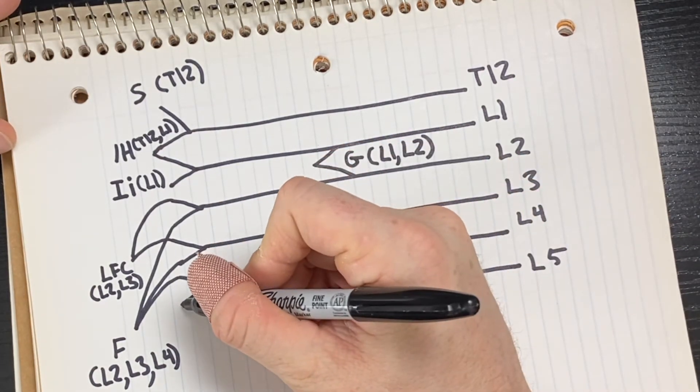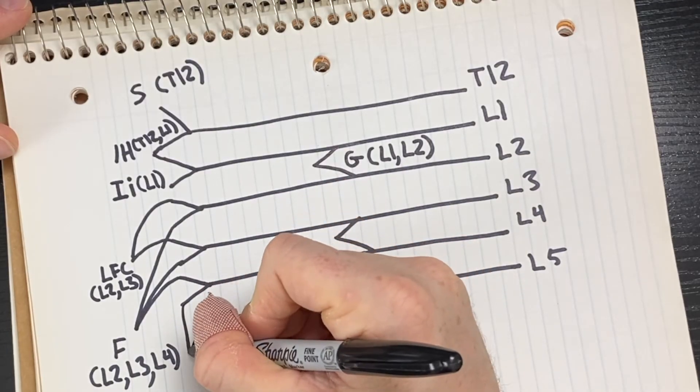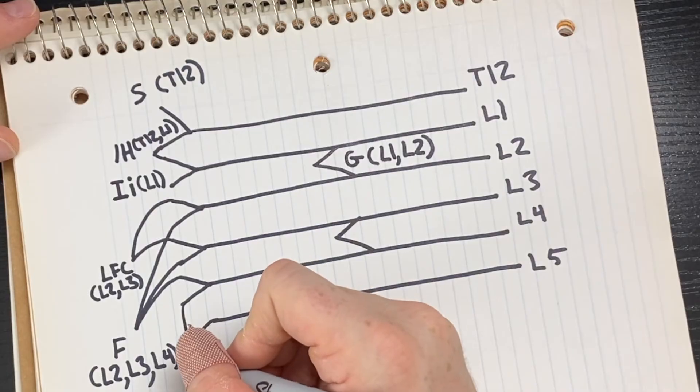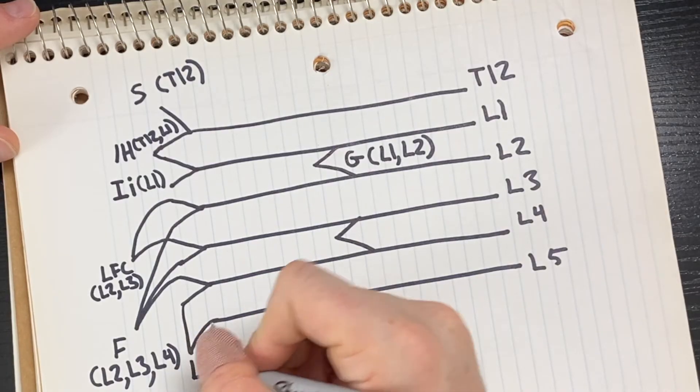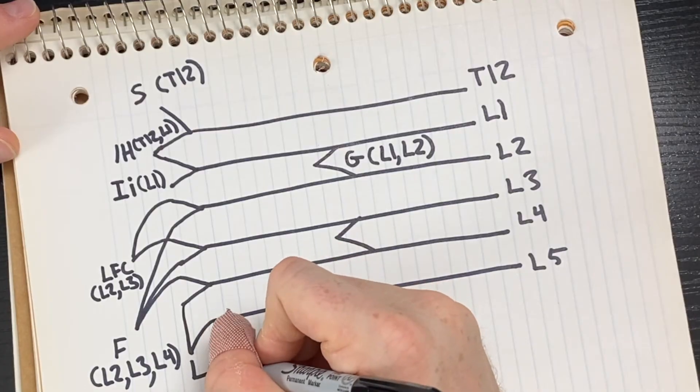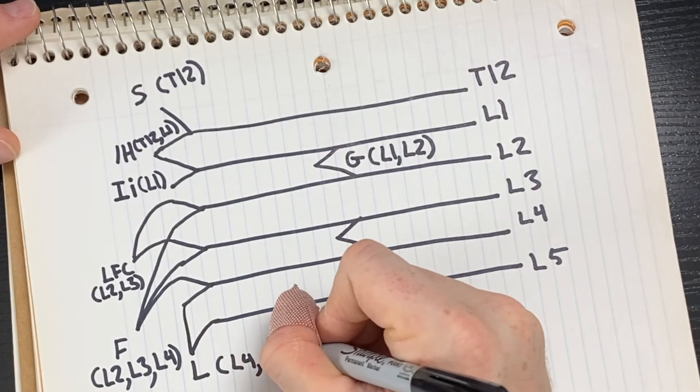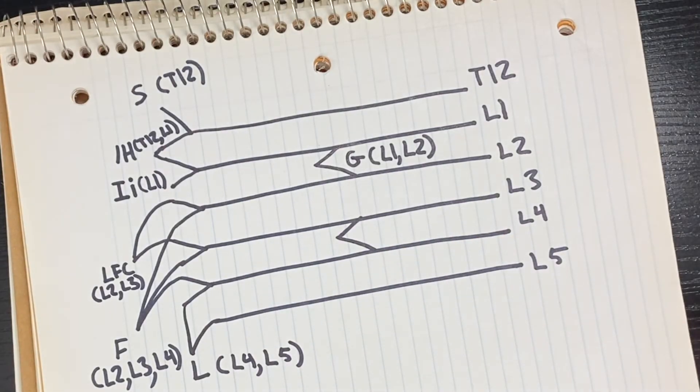Then you'll take the lone lower branch of L4 and combine that with L5, and this is going to form the lumbosacral nerve.